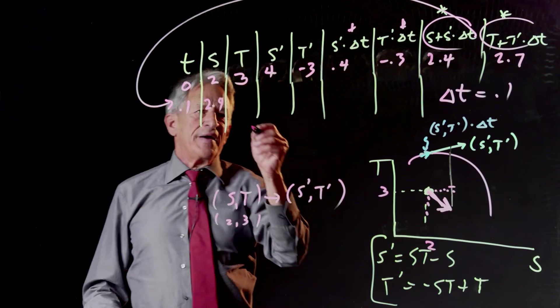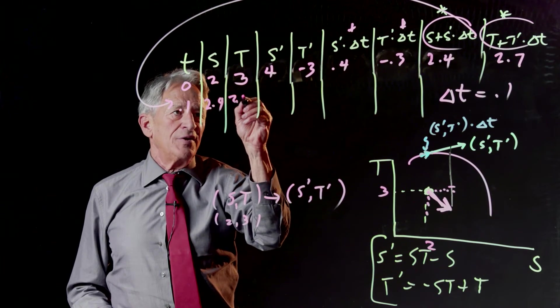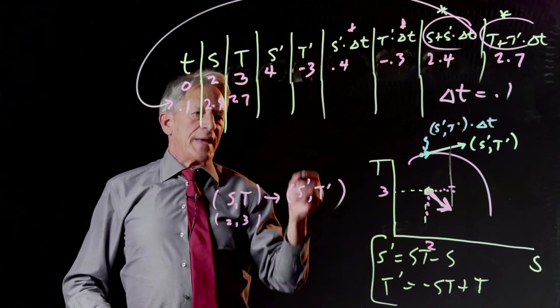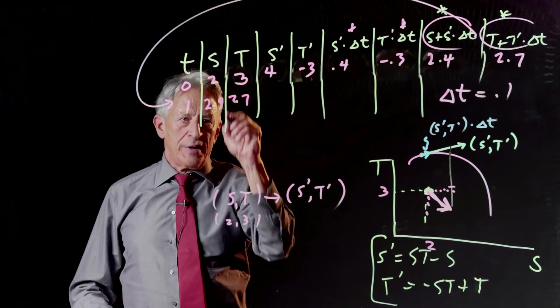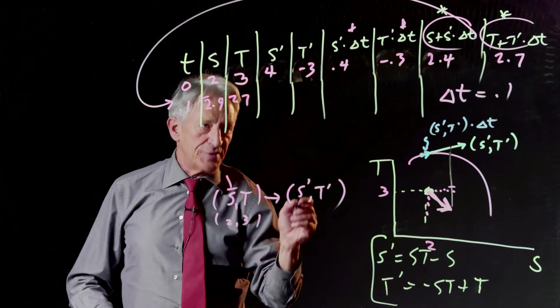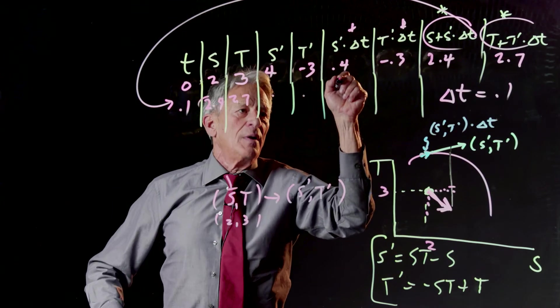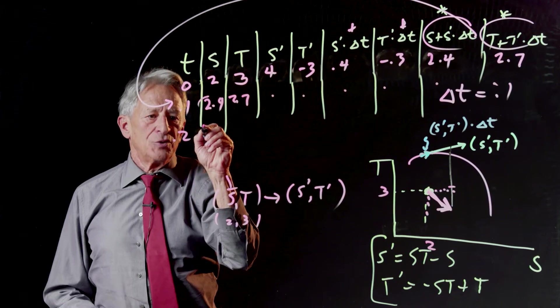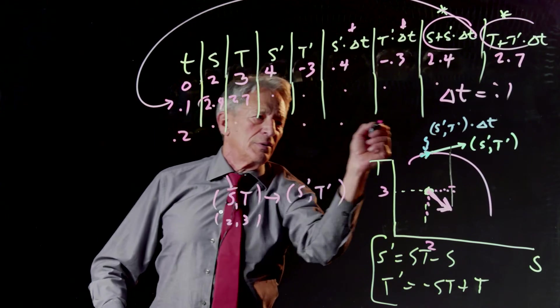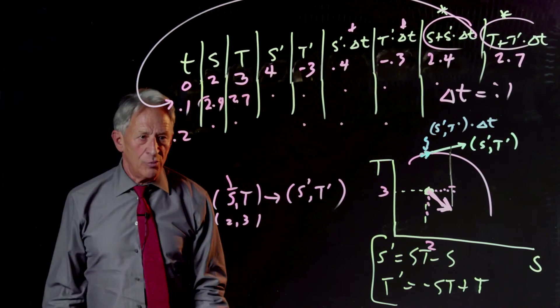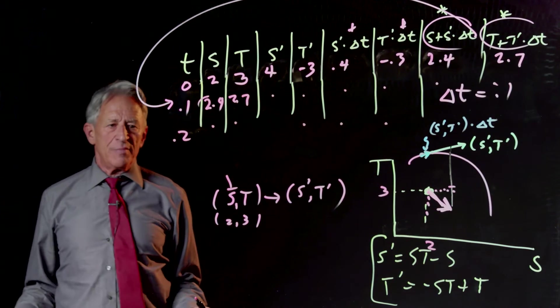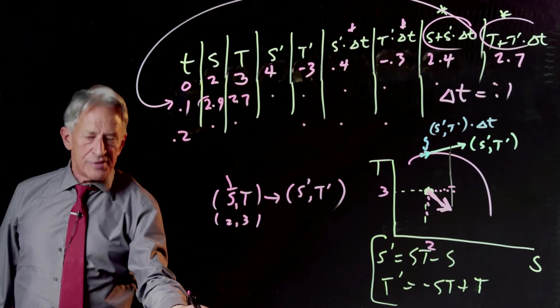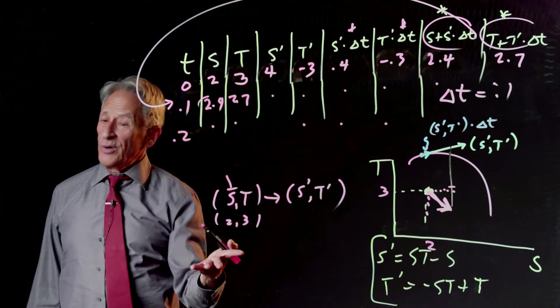and now we plug 2.4 and 2.7 into this and get our new s prime and our new t prime and we do all the multiplication and we carry that down to the next level and in that way with this spreadsheet method we generate as many steps as we need.